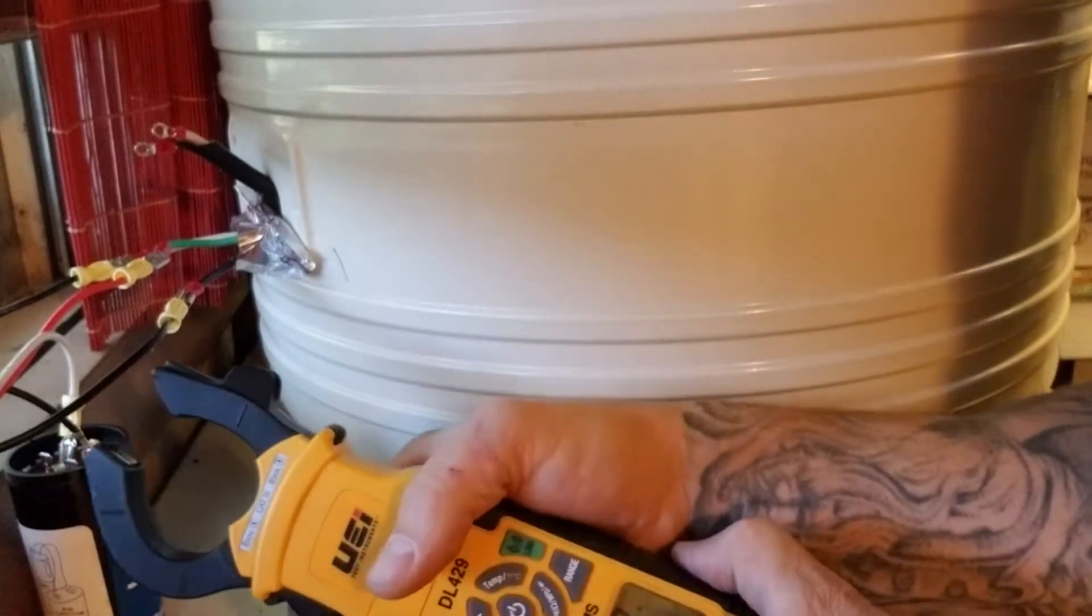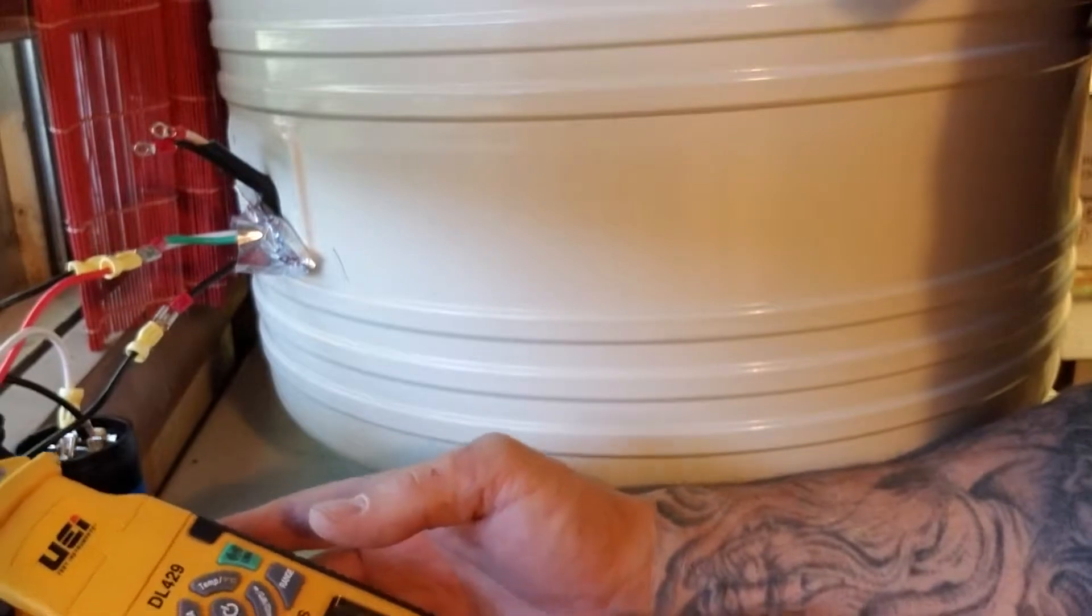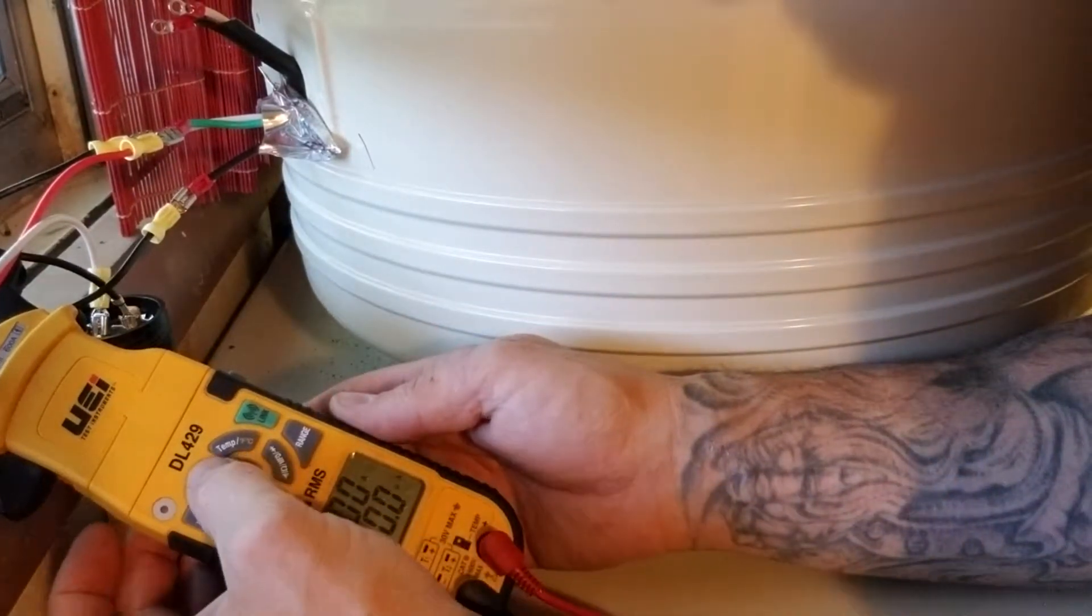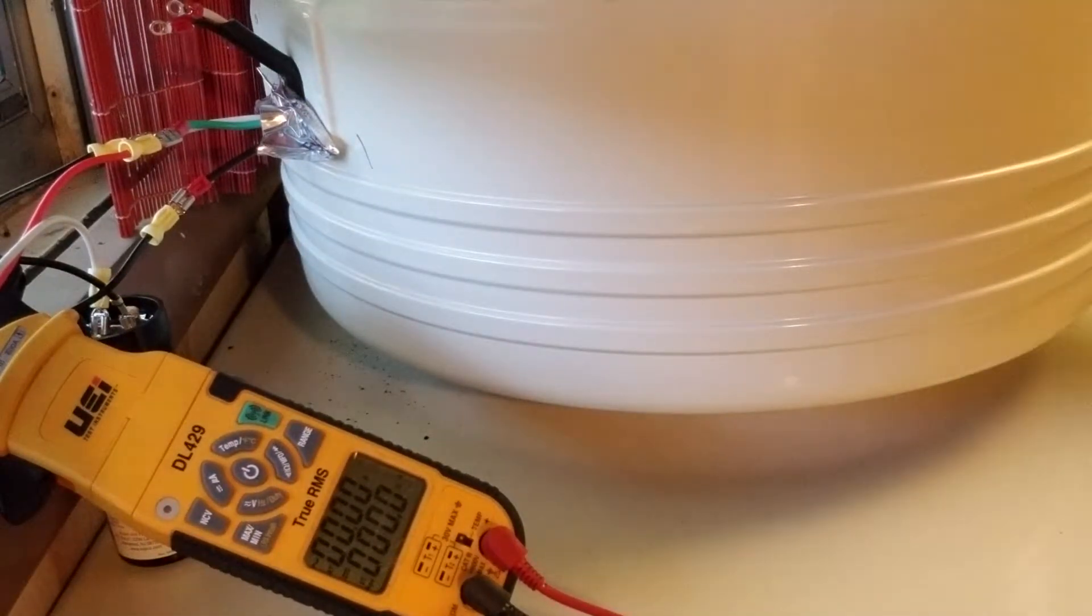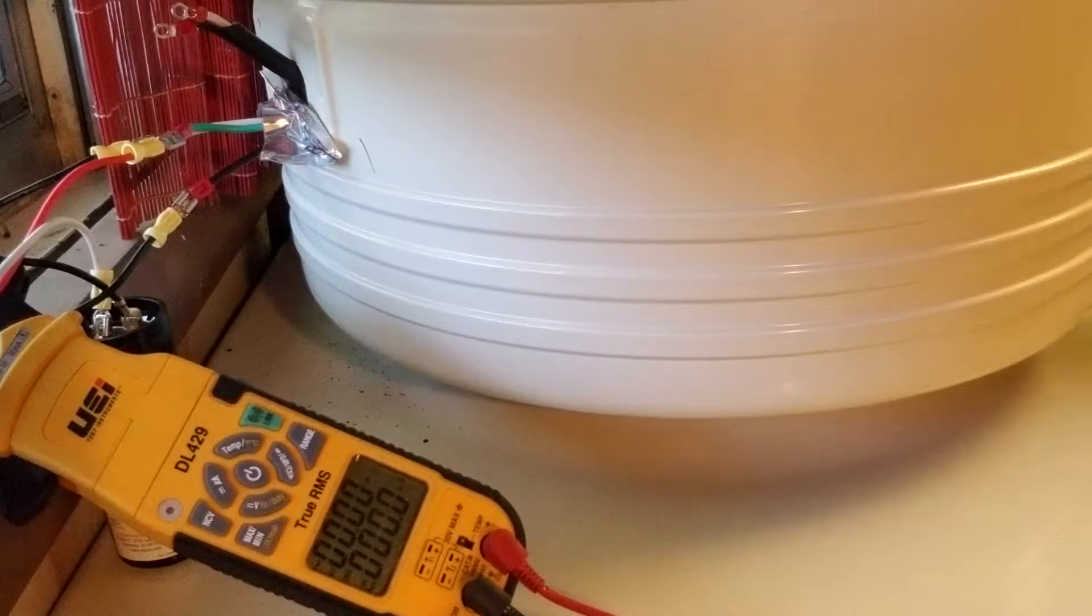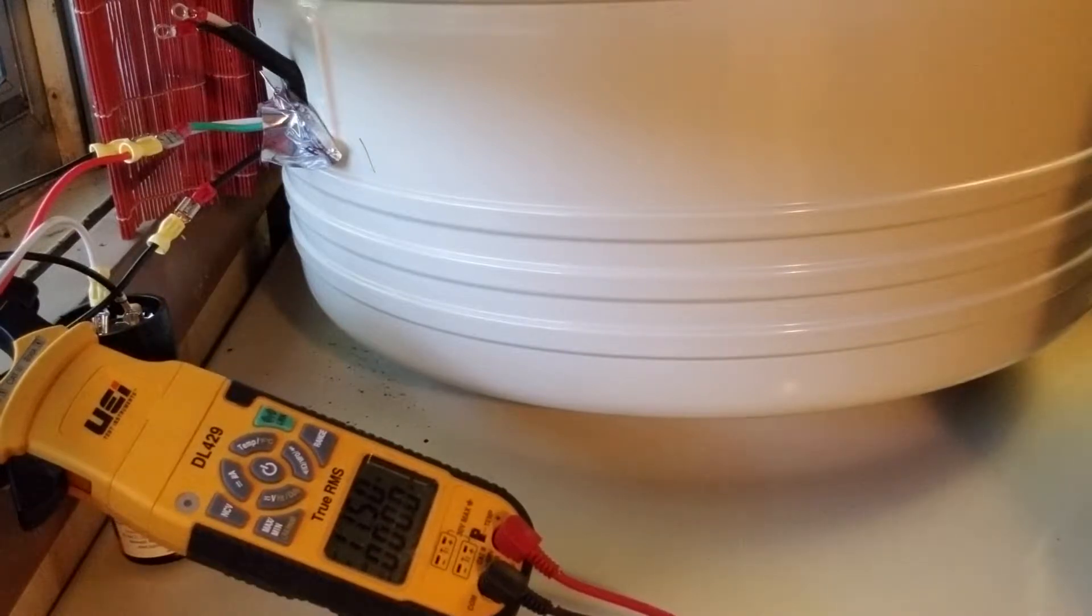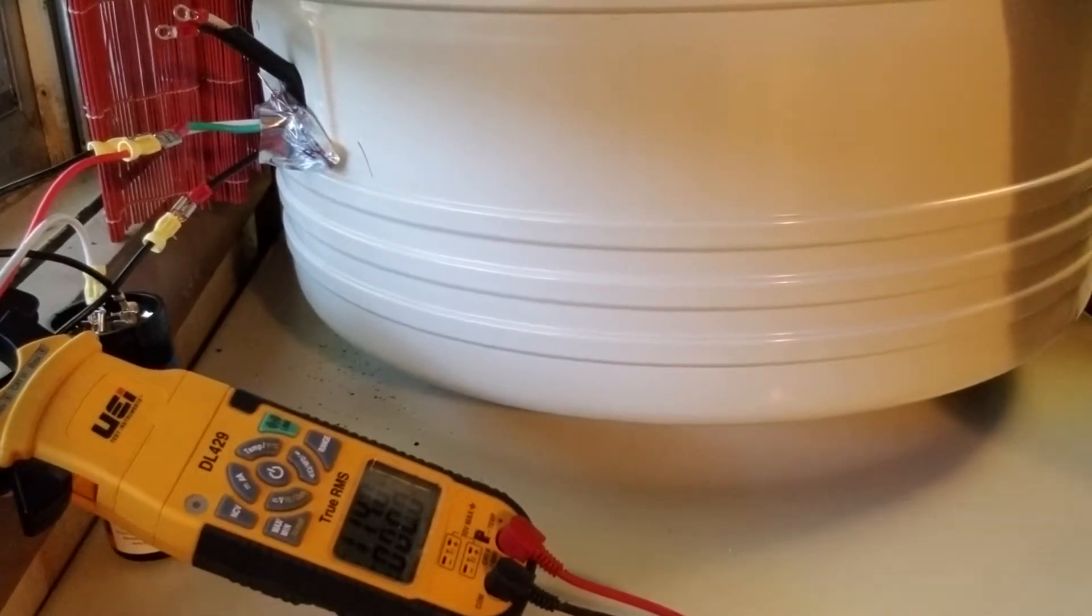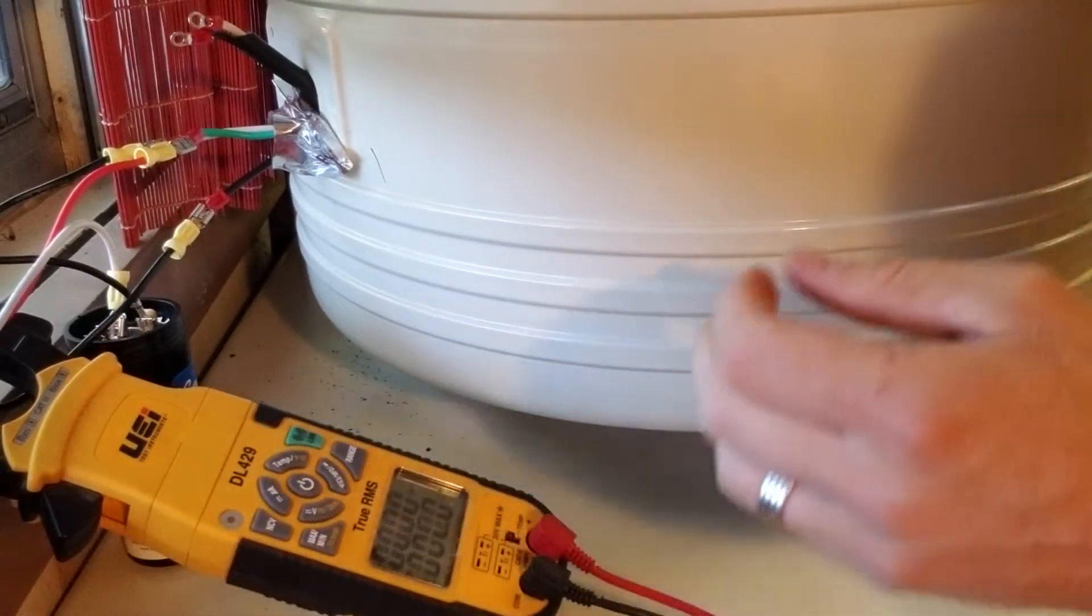Okay, and then we'll just hook this guy up here. This is going to show my amp draw. We're going to see what the amp draw is. All right, I'm going to turn the thermostat on and we'll see what the amp draw is. 11 amps. 11 amps and it will not start, so I'm going to try to do what I did with the other compressor.